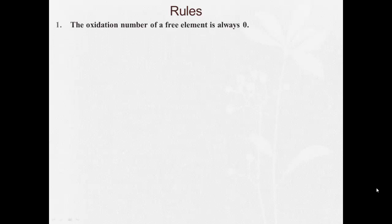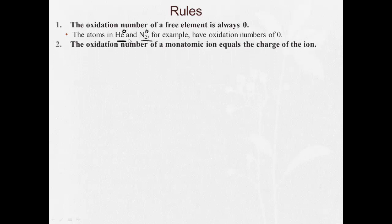Alright, so rule one. The oxidation number of a free element is always zero. For example, where we have here helium by itself and nitrogen by itself. Even though it's N2, it's still considered by itself. We would assign each of these an oxidation number of zero. The oxidation number of a monatomic ion equals the charge of the ion. For example, when we say Na+, the oxidation number is plus one. When we say N3-, we would say the oxidation number of that nitrogen is minus three.